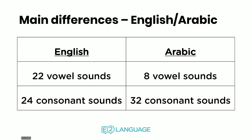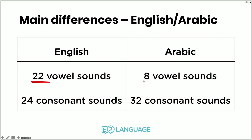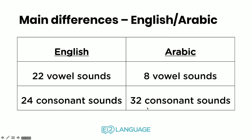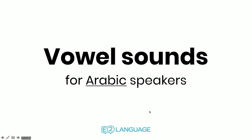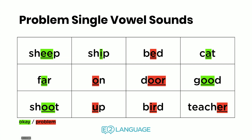What are the main differences between English and Arabic in terms of speaking? Well, in English there are 22 vowel sounds, but in Arabic there are only eight vowel sounds. So Arabic speakers have a lot of trouble trying to make some of the English vowel sounds — we're going to look at that in this lesson. In English there are 24 consonants; in Arabic there are 32. Nevertheless, there are still some consonants that Arabic people find difficult to pronounce. So we're going to look at these particular issues. Stick around, this will be interesting. Let's start by looking at the vowel sounds for Arabic speakers.